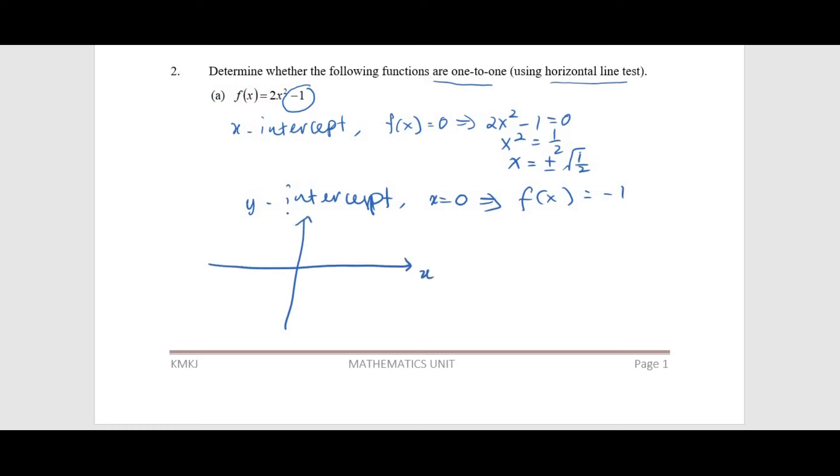This is the x-axis, this is the y-axis. The y-intercept is at -1. The graph should open upward, so it's a parabola shape. This is √(1/2) and here is -√(1/2). Now we can sketch the horizontal line.